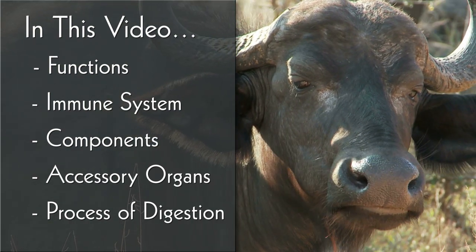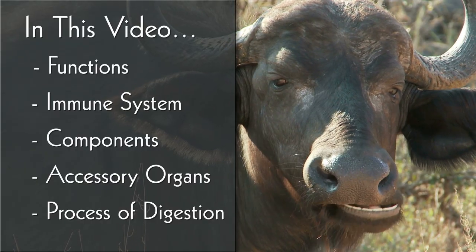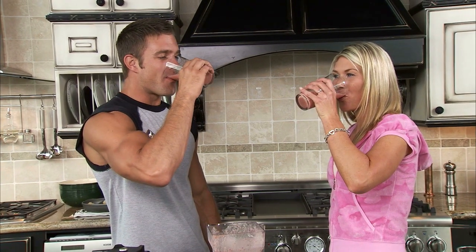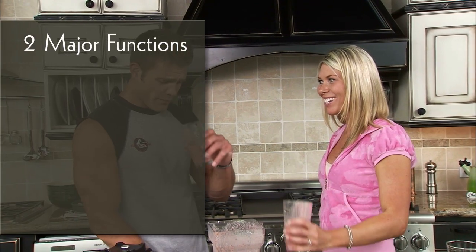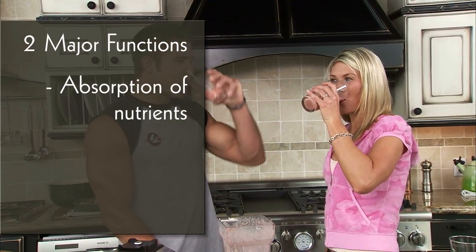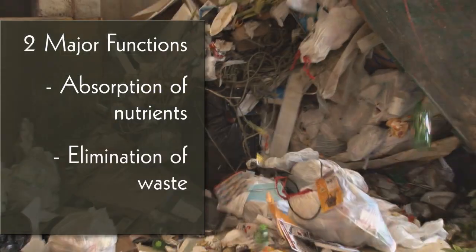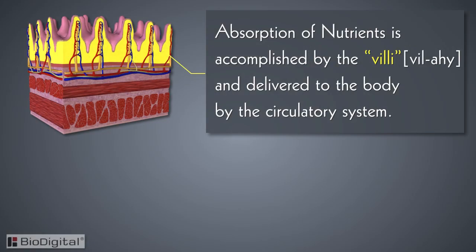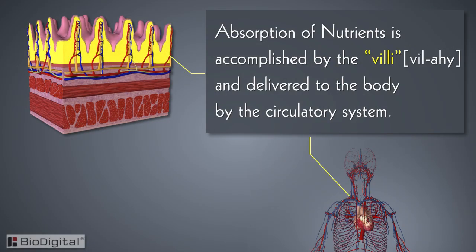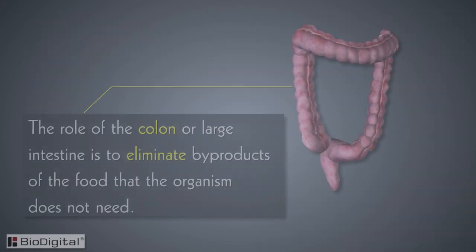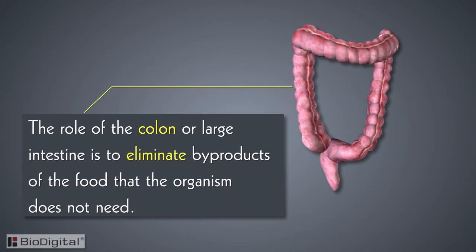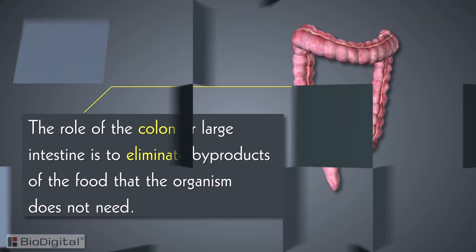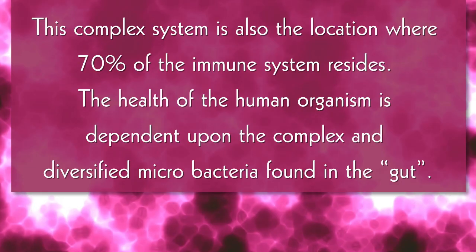The components of the digestive system are classified by two major functions: the absorption of nutrients and the elimination of waste. The absorption of nutrients is accomplished by the villi and delivered to the body by the circulatory system. The role of the colon, or large intestine, is to eliminate byproducts of the food that the organism does not need — this is known as waste.